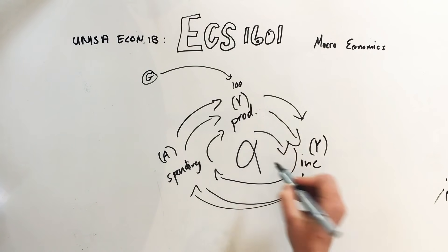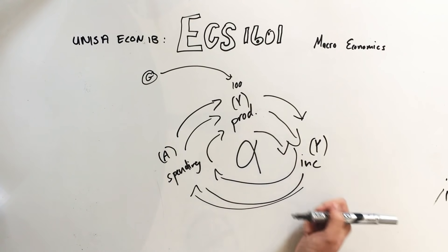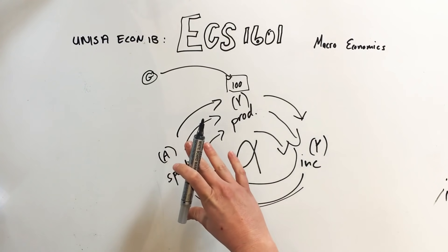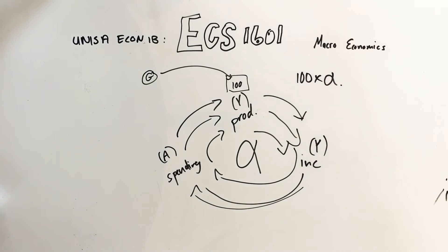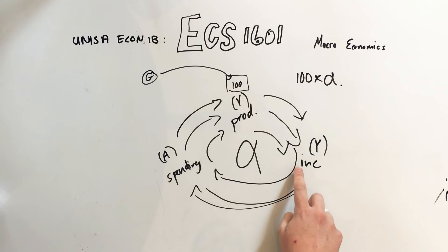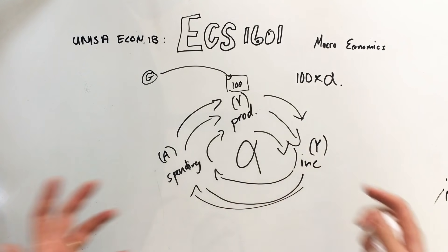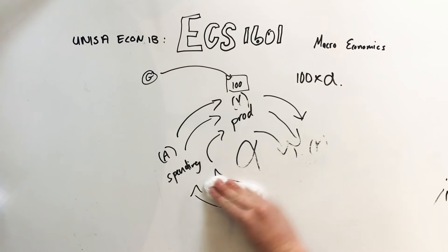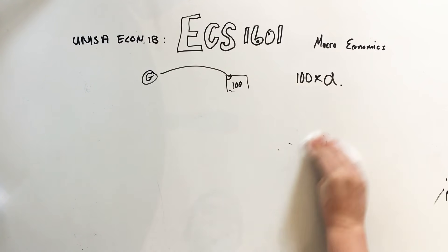This beautiful thing is called the multiplier, represented with alpha (α), which looks like an A. The multiplier says that for every 100 rand you put into the system, the economy grows by 100 times the multiplier, because that same money gets spent over and over again. This is made possible by commercial banks — you put your money with Capitec, Capitec lends it to somebody, they spend it again. The more income there is, the more we earn, the more we spend, and the more production there is.